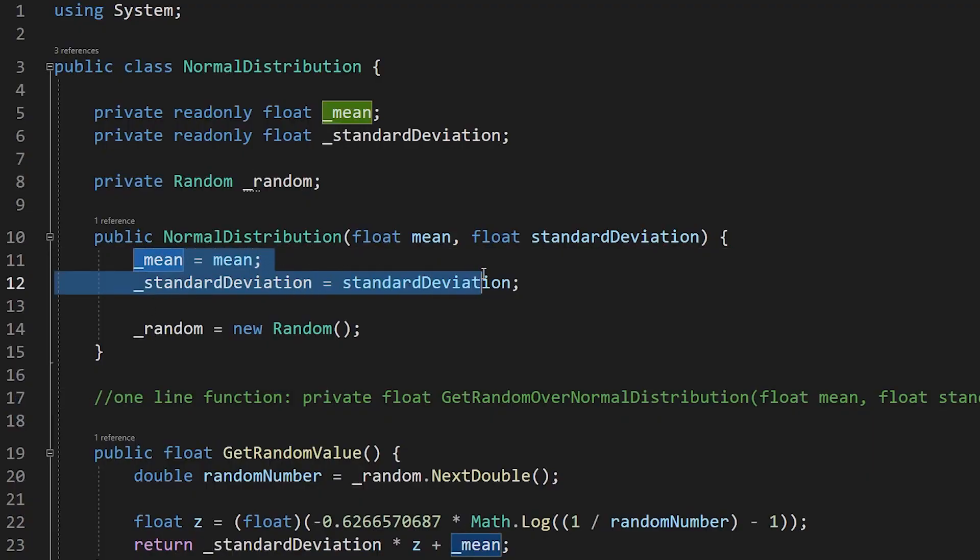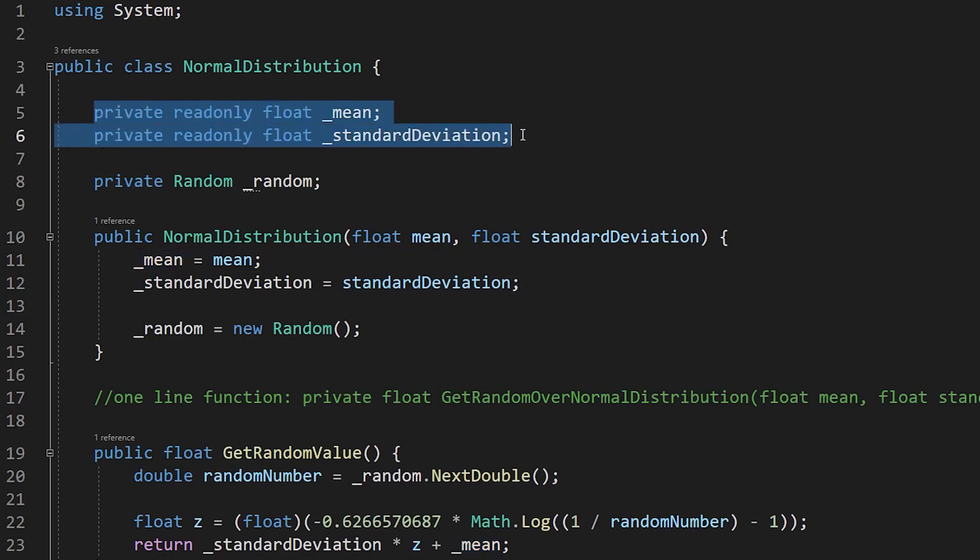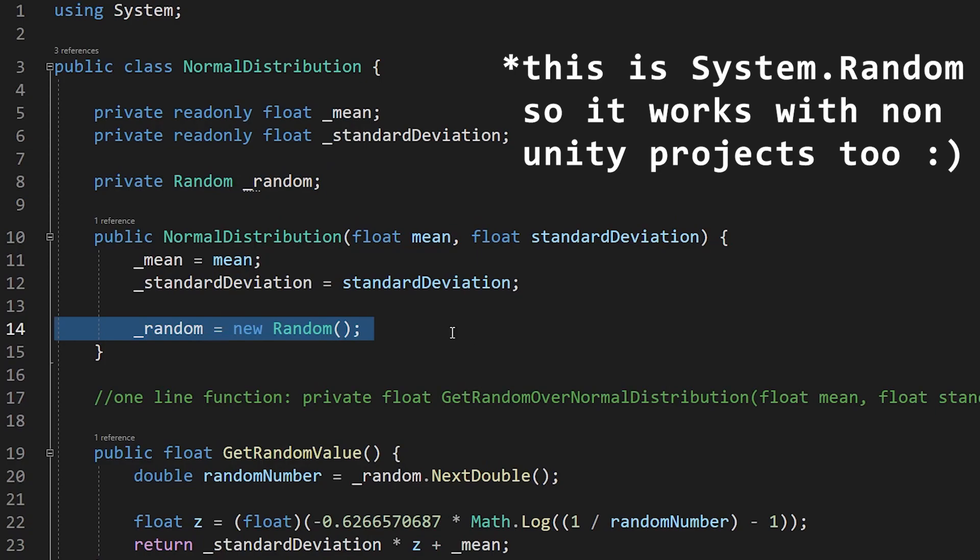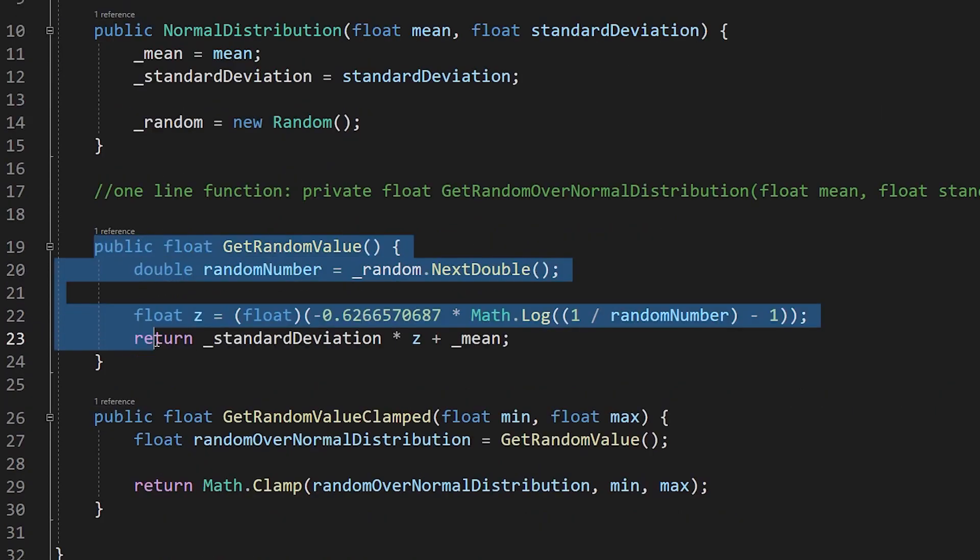Awesome. Now that context out of the way, let's look at the code. In our constructor, we set our mean and standard deviation values to what they're supposed to be. Then, we make a new random object so we can generate random probabilities.